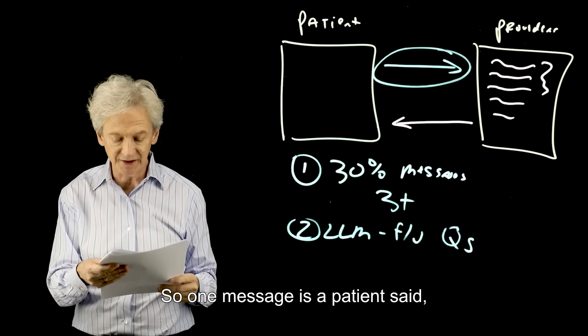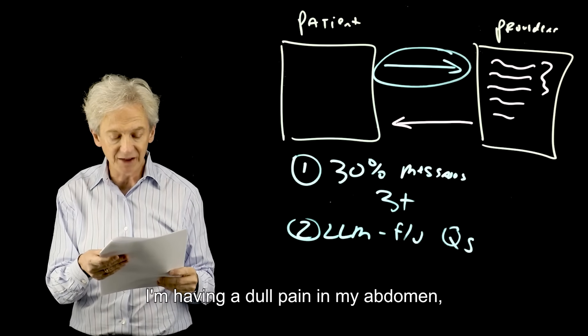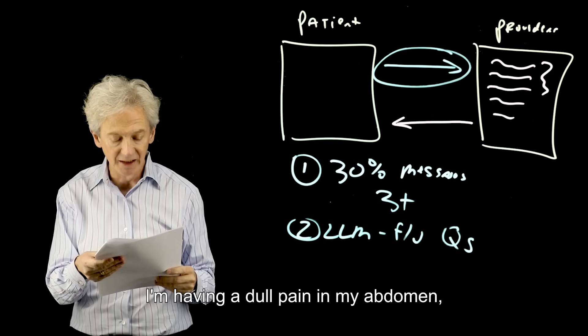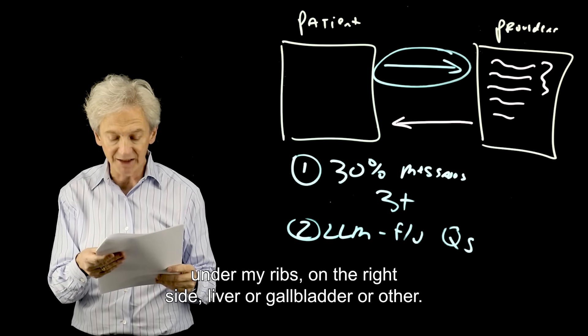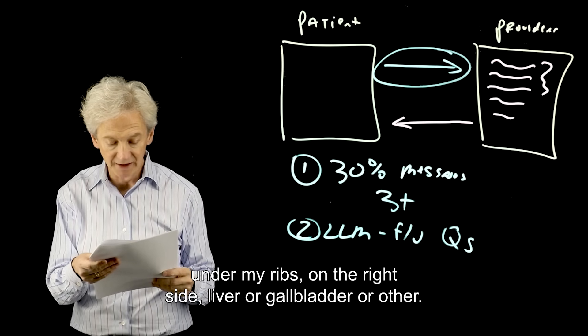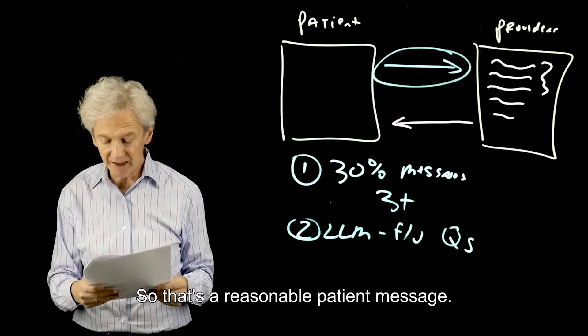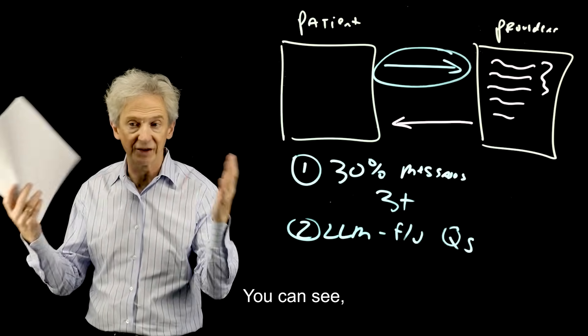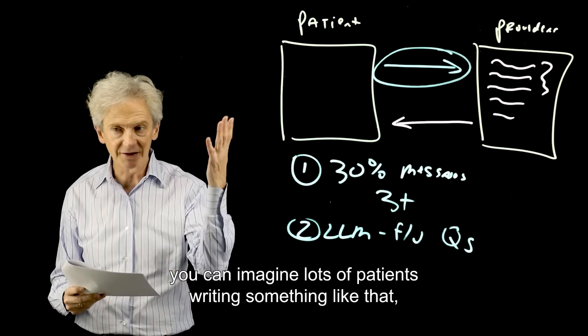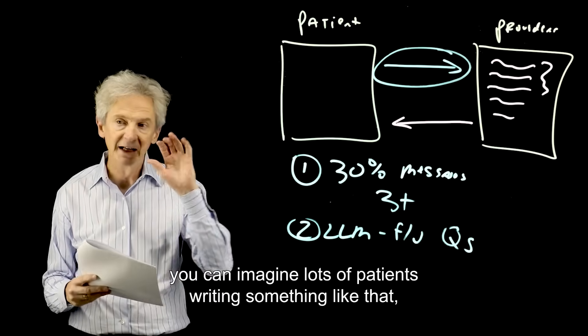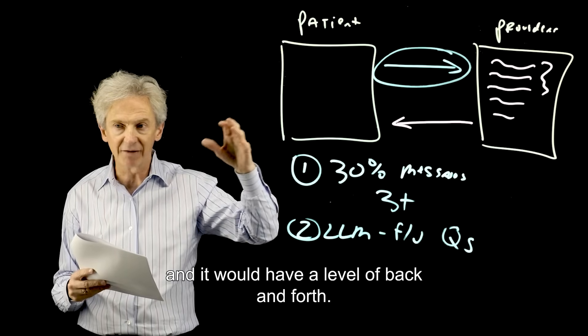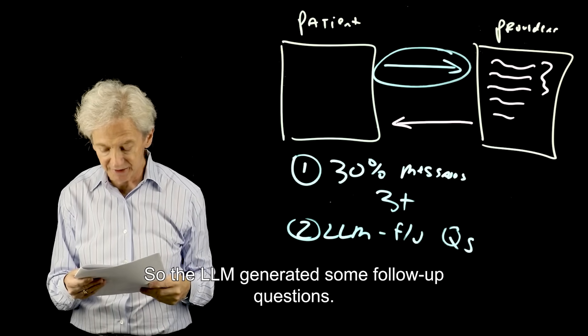So one message is a patient said, I'm having a dull pain in my abdomen under my ribs on the right side, liver or gallbladder or other. I'd like to be seen. Thanks. Okay. So that's a reasonable patient message. You can see, you can imagine lots of patients writing something like that. And it would have a level of back and forth.